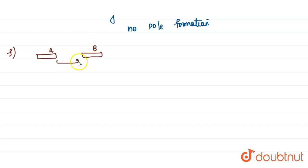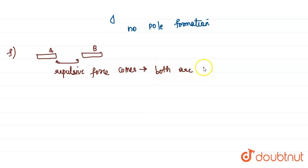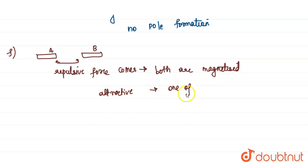When we bring both ends closer together, if a repulsive force comes, we can assume that both are magnetized. When the magnetized bars are placed so that their different ends come closer, if repulsive force exists between them, we can say both bars are magnetized. Otherwise, if it is attractive, then we can say one of them is not magnetized.